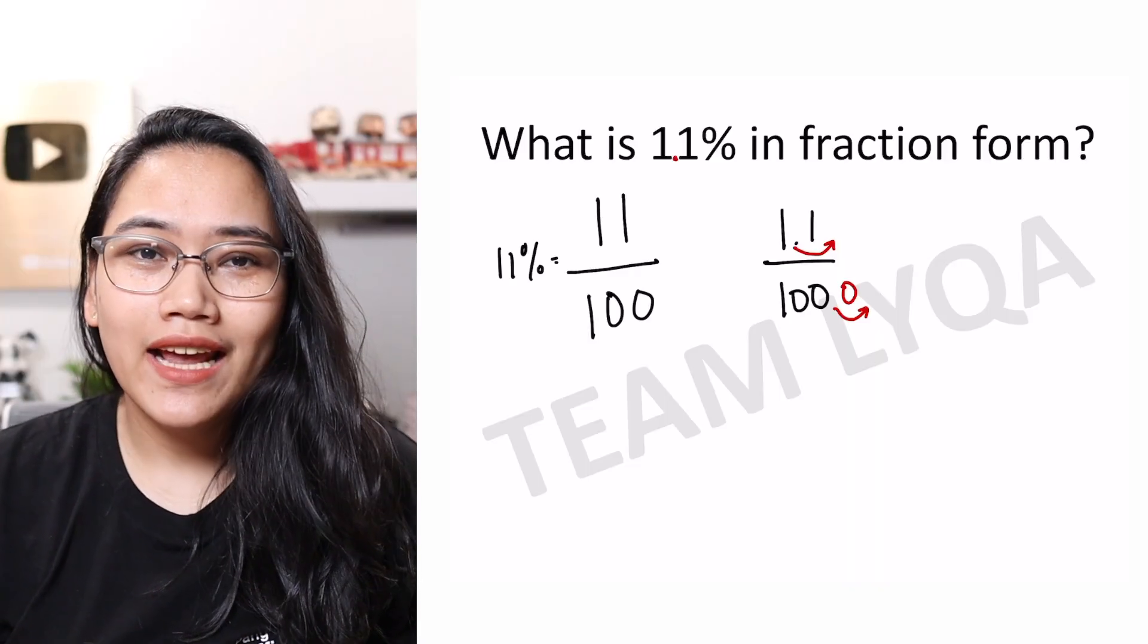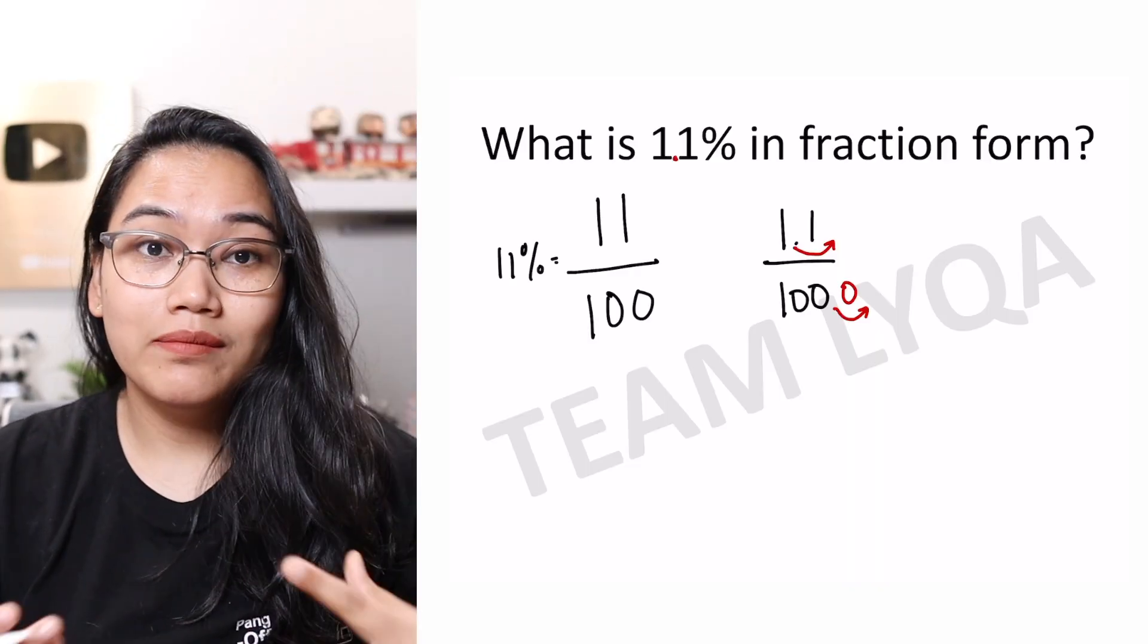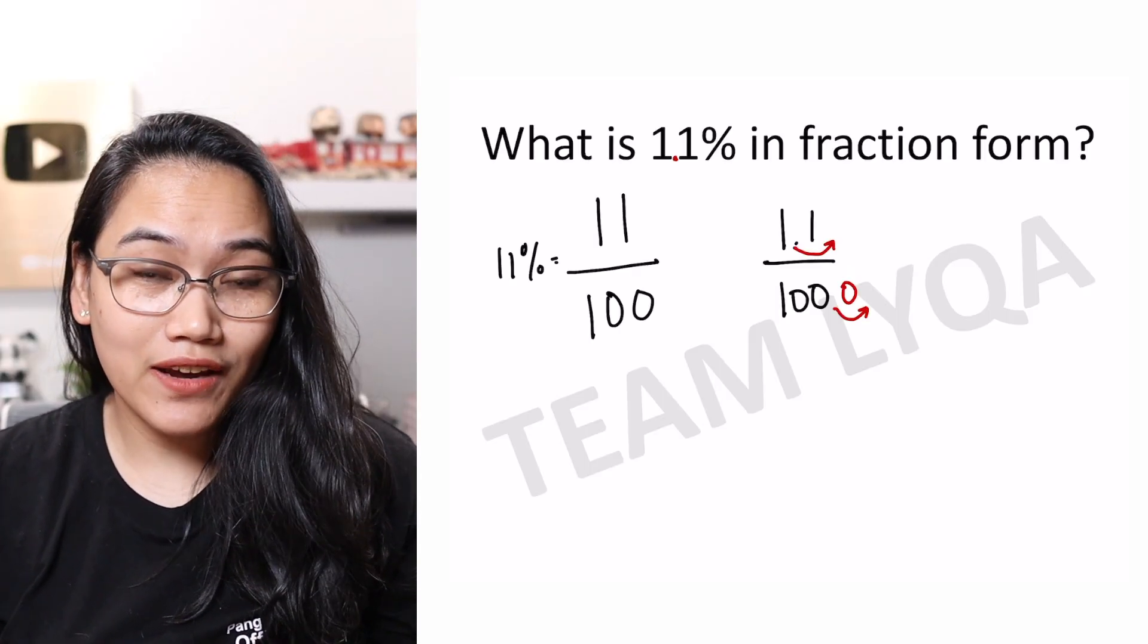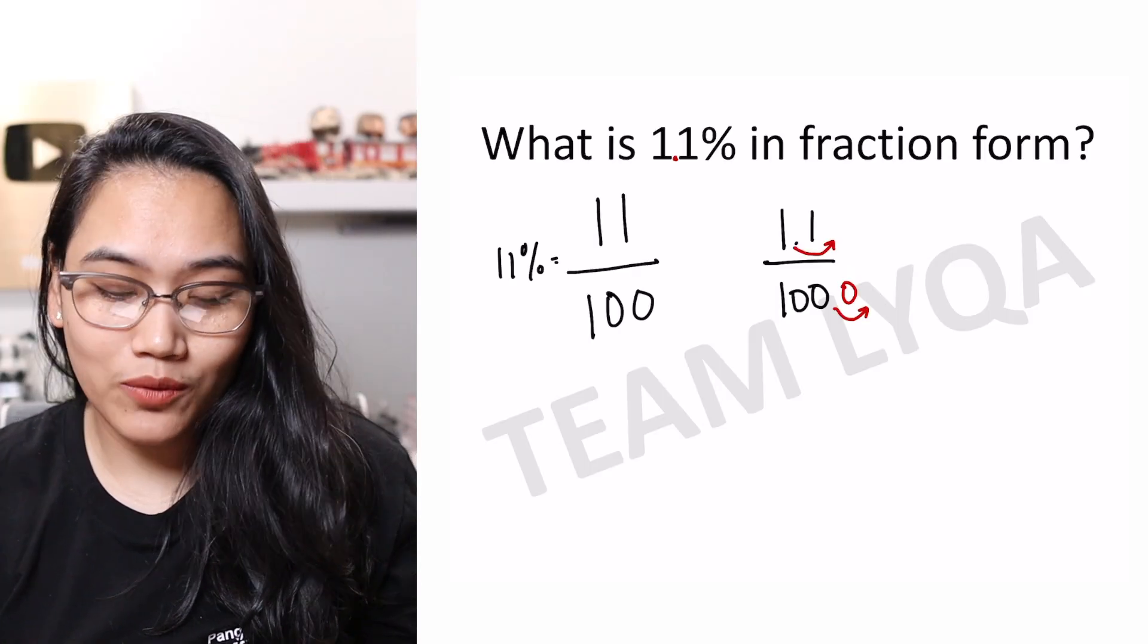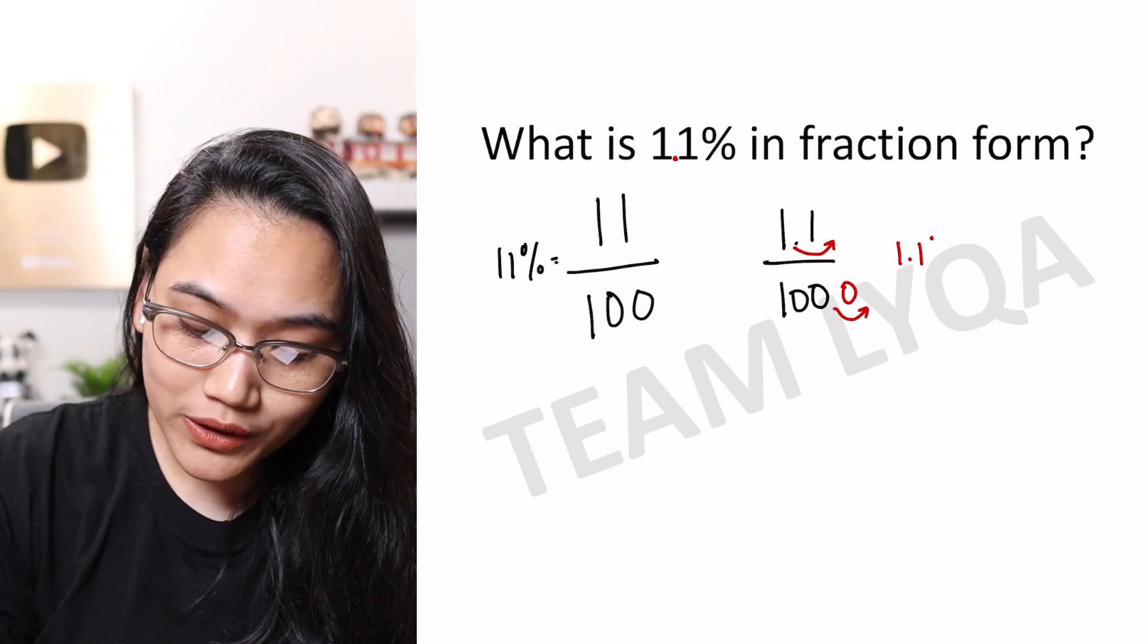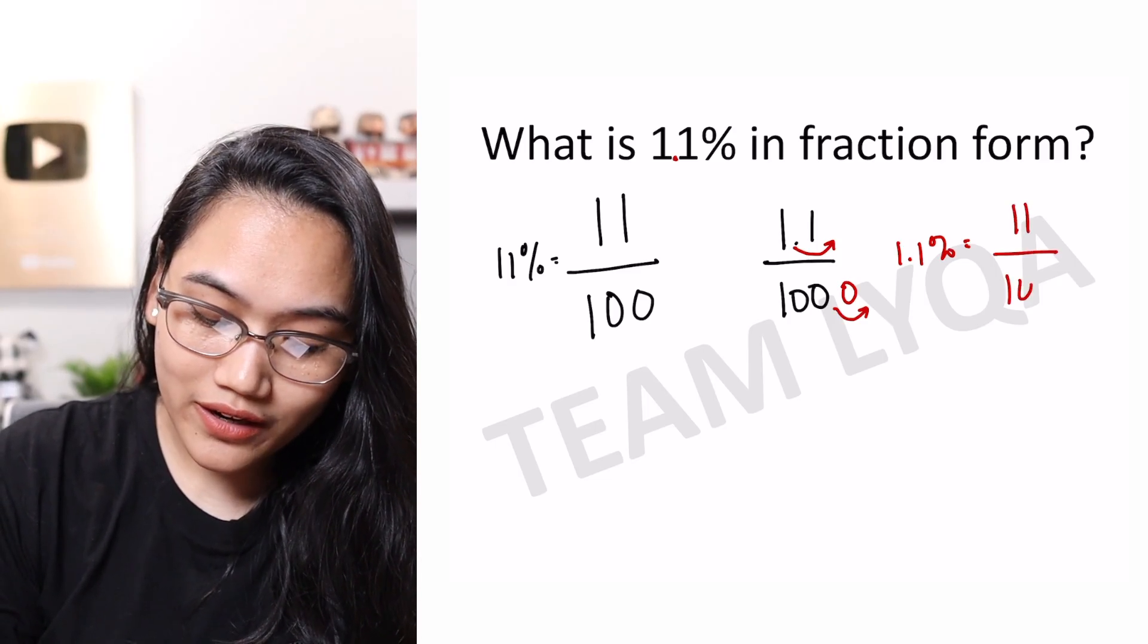Now, what is this moving to the right? That's basically multiplying both the top and bottom by 10, because 1.1 times 10 is 11, and 100 times 10 is 1,000. So that means 1.1% is 11 over 1,000.